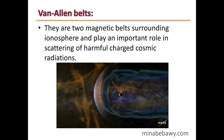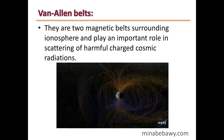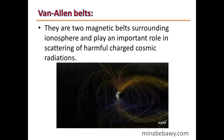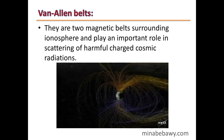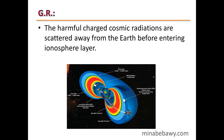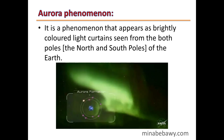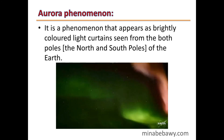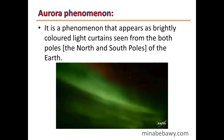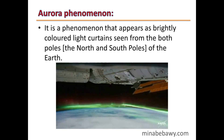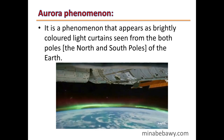The Van Allen Belts are two magnetic belts surrounding the Ionosphere. They play an important role in scattering harmful charged cosmic radiation away from the Earth before it enters the Ionosphere. The Aurora phenomenon appears as brightly colored light curtains seen from both the North and South Poles of the Earth.